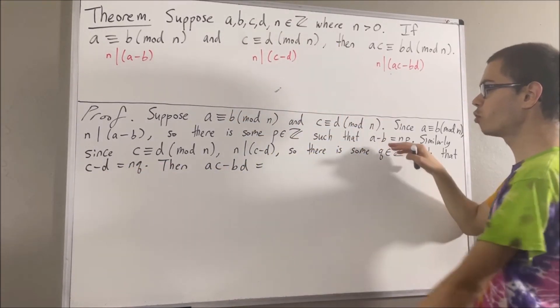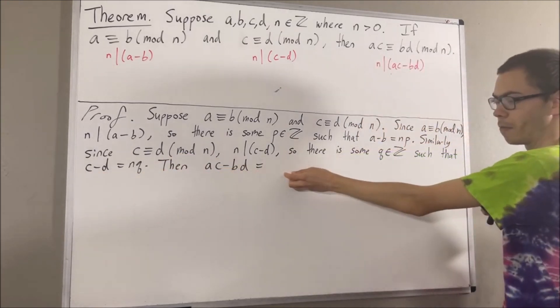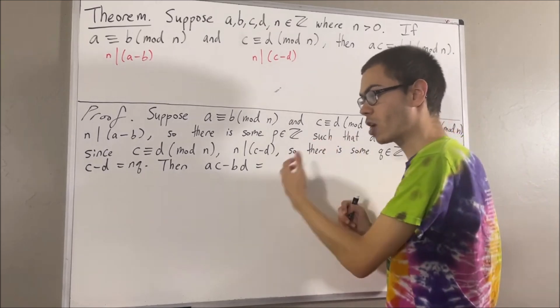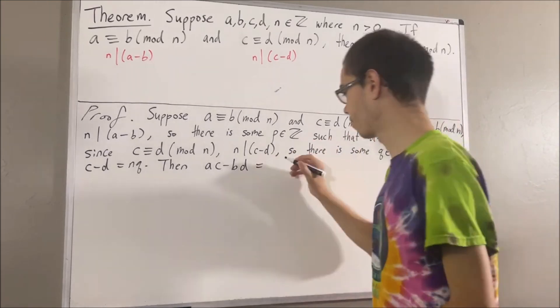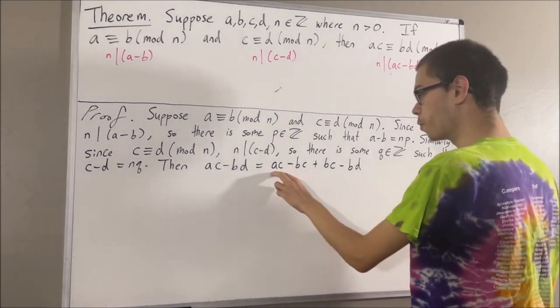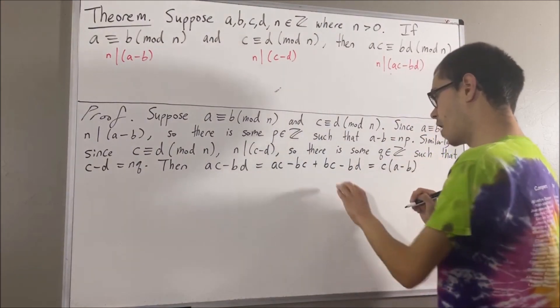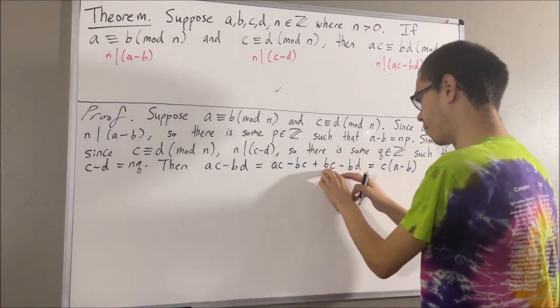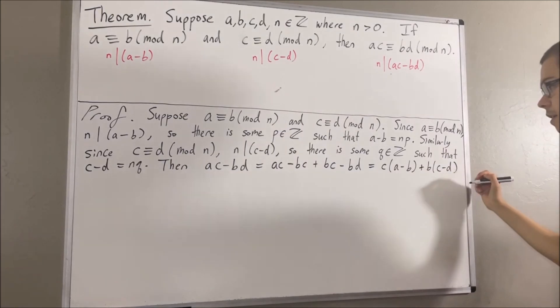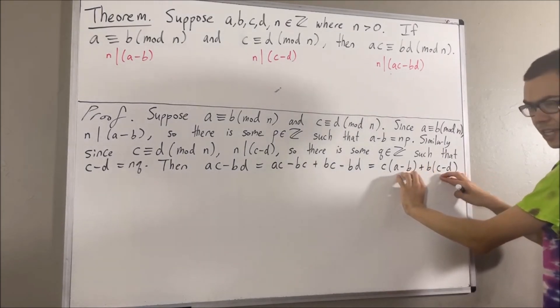Well, we probably need to somehow use the fact that a minus b equals np and c minus d equals nq. So how can we bring these two guys into what we're doing right here? Well, one way is we could subtract and add bc. If we do this, well then, for the first two terms, we can factor out a c, and for the last two terms, we can factor out a b. And as you can see, we've brought a minus b and c minus d into our work.